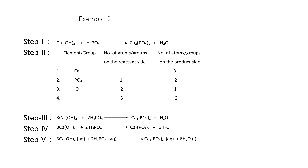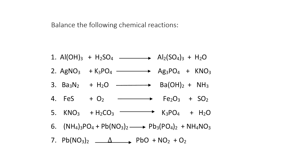In step four, we balance oxygen first. We write 6 before H₂O on the product side, giving 6 oxygen atoms. On the reactant side: 3 × 2 = 6 oxygen atoms — balanced. Hydrogen is also automatically balanced. This gives us the balanced chemical equation. In step five, we mention physical states: calcium hydroxide is in aqueous state (aq), phosphoric acid is aqueous (aq), calcium phosphate is aqueous (aq), and water is liquid (l). Some additional examples have been given as homework — thank you.